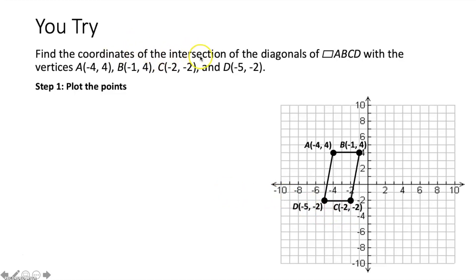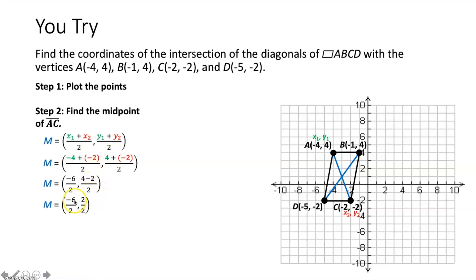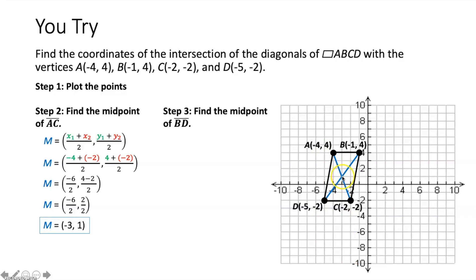We are again finding the coordinates of the intersection of the diagonals. In a parallelogram the diagonals bisect each other, so the intersection is the midpoint of both diagonals. For segment AC: negative 4 plus negative 2 is negative 6, and 4 plus negative 2 is 2. So negative 6 over 2 is negative 3, and 2 over 2 is 1, giving the midpoint (−3, 1).